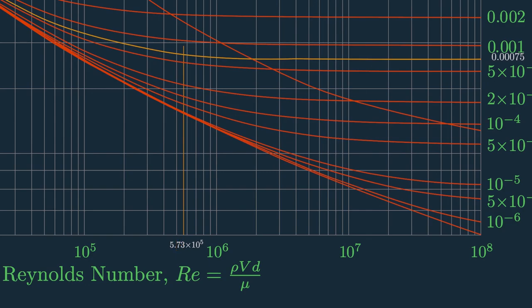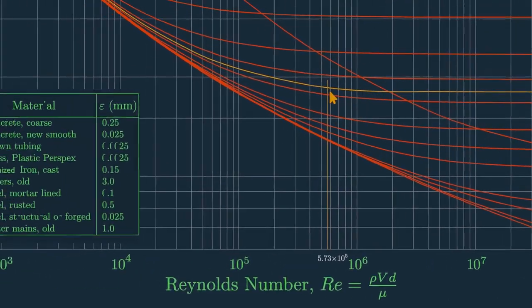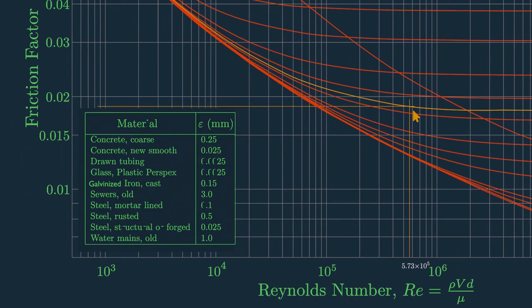Now to a rough estimation of 5.7 times 10 power 5, which lies somewhere between 5 and 6. The point of intersection of these two lines gives a friction factor, which is 0.019.